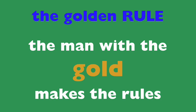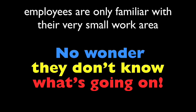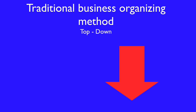They all work well as a structure for apportioning blame. Many bosses follow the same rule — the golden rule: the man with the gold makes the rules. Employees are only familiar with their very small area. No wonder they don't know what's going on.